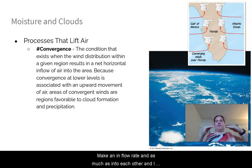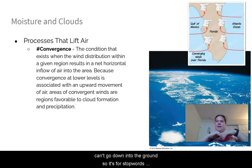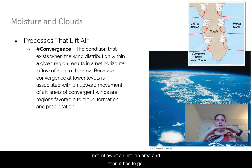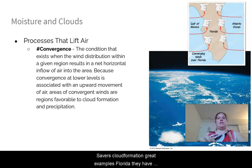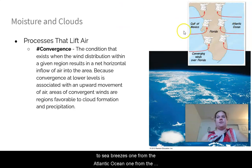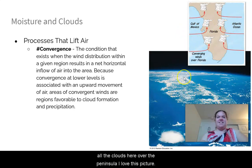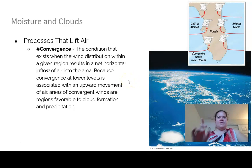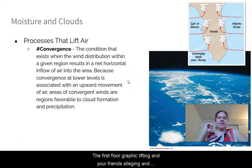Number three is convergence — when wind distribution is into an area (net inflow), air can't go down into the ground so it's forced upward. This favors cloud formation. A great example is Florida, which has two sea breezes — one from the Atlantic Ocean and one from the Gulf of Mexico. They converge over Florida, producing all those clouds over the peninsula.